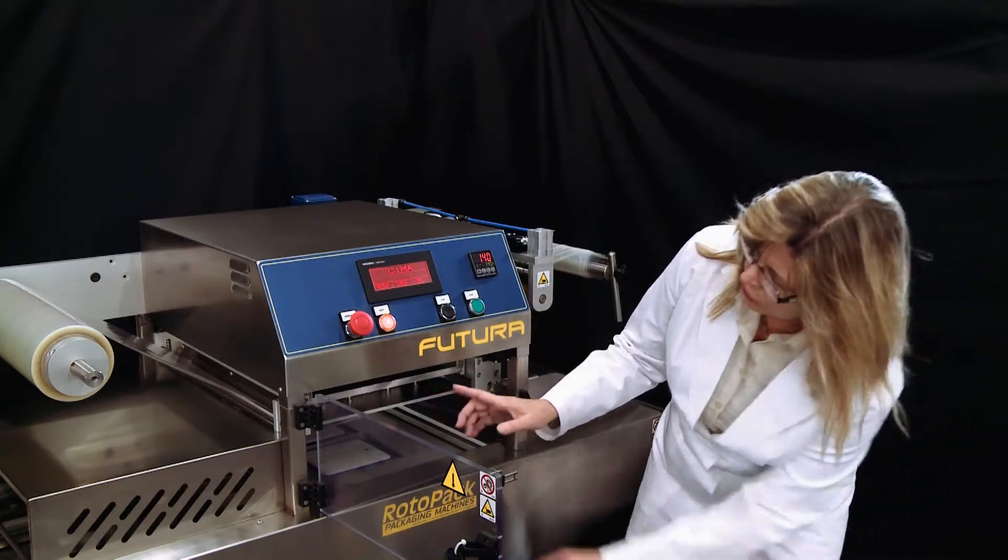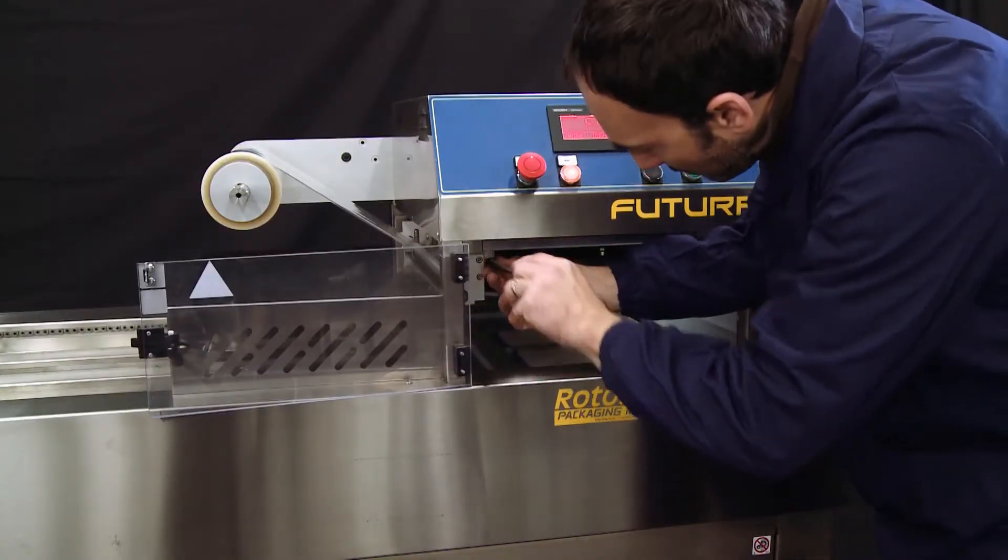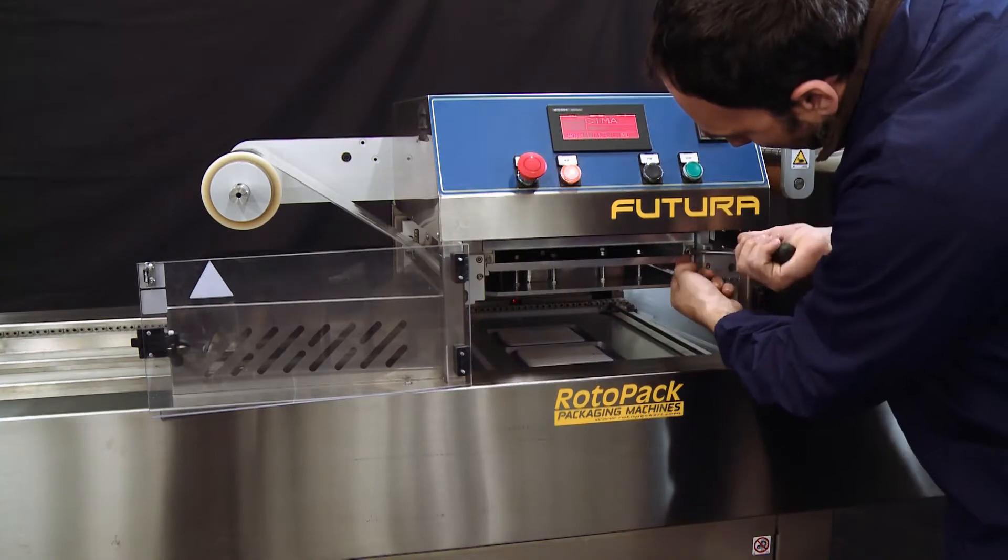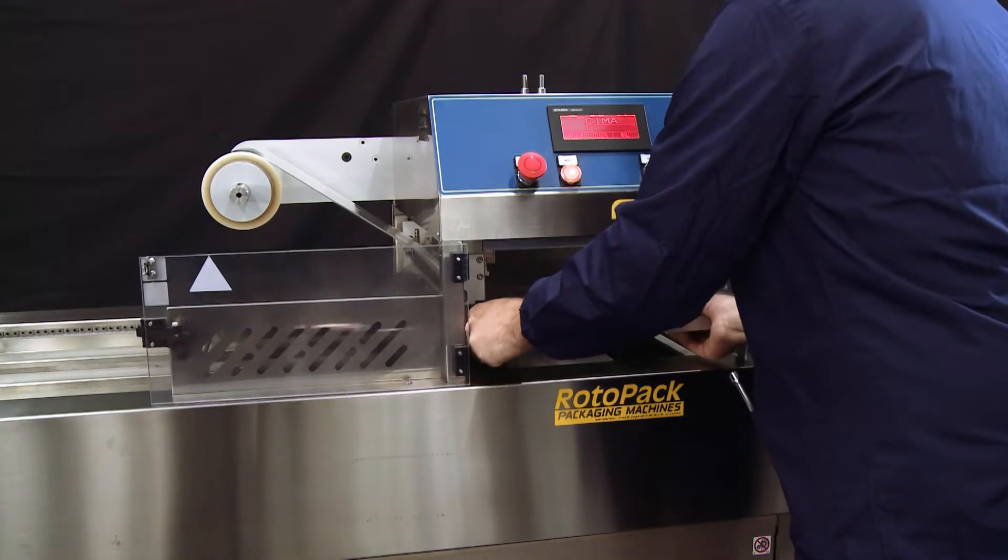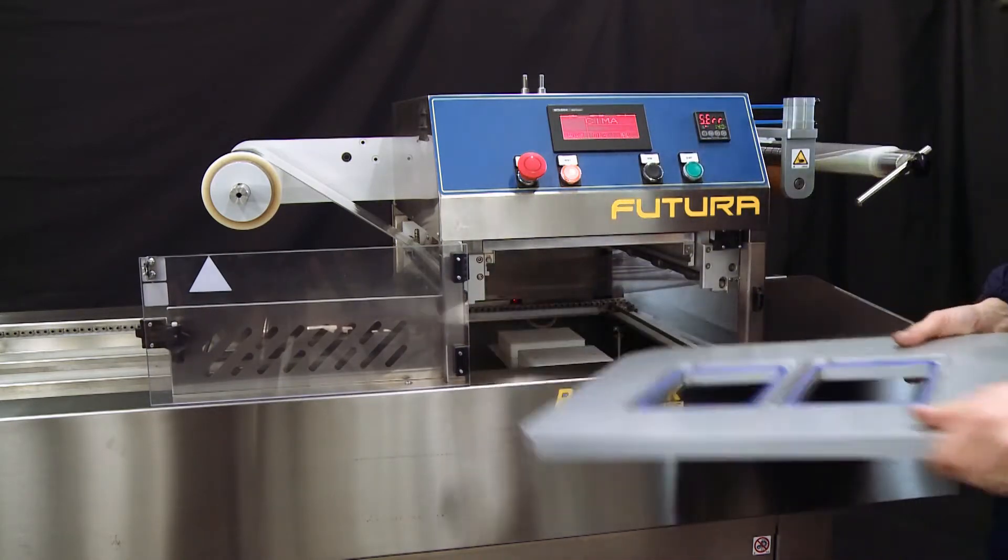In order to change the mold, you have two bolts on either side of the mold. You're going to undo those and the mold will simply slide out. On the bottom, you have another couple of bolts in order to change the lower part of that mold.